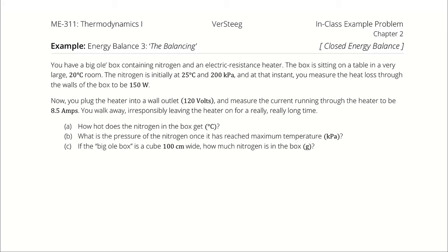You have a big box containing nitrogen and an electric resistance heater. The box is sitting on a table in a very large 20 degrees Celsius room. The nitrogen is initially at 25 degrees Celsius and 200 kilopascals, and at that instant you measure the heat loss through the walls of the box to be 150 watts. Now you plug in the heater — that's a 120 volt wall outlet — and measure the current running through the heater to be 8.5 amps.